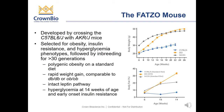Let me introduce you to Crown Bio's FATSO mouse. The FATSO mouse was developed by crossing a C57 Black 6J with AKRJ mice, and was selectively bred for obesity, insulin resistance, and hyperglycemia phenotypes, followed by inbreeding of more than 30 generations. The resulting FATSO mouse model closely mirrors the human metabolic syndrome phenotype more than conventional rodent models.